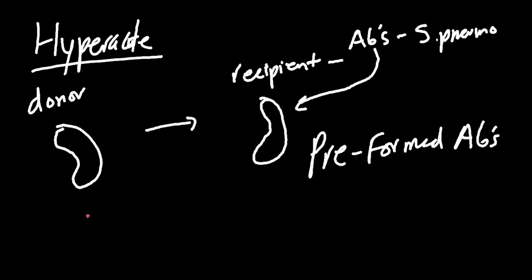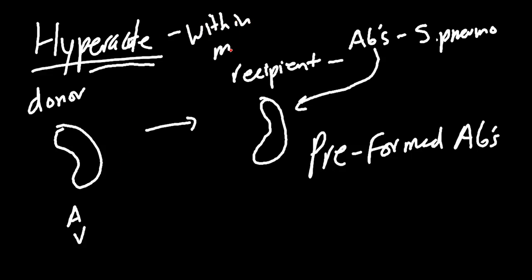Surgeons used to stand there for five to ten minutes after hooking up the renal vasculature — the artery and the vein — watching for a hyper acute reaction. A hyper acute reaction happens within minutes. They'd watch to see if preformed antibodies were attacking the organ: it would turn cyanotic, the kidney would change color, and they'd immediately remove it and close the patient up to try again later.